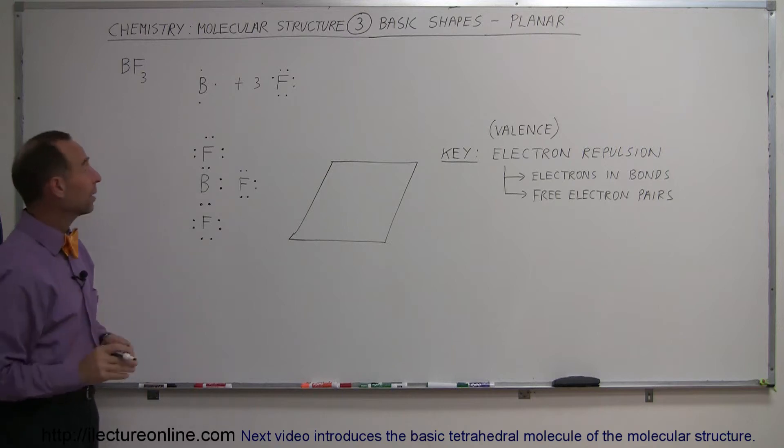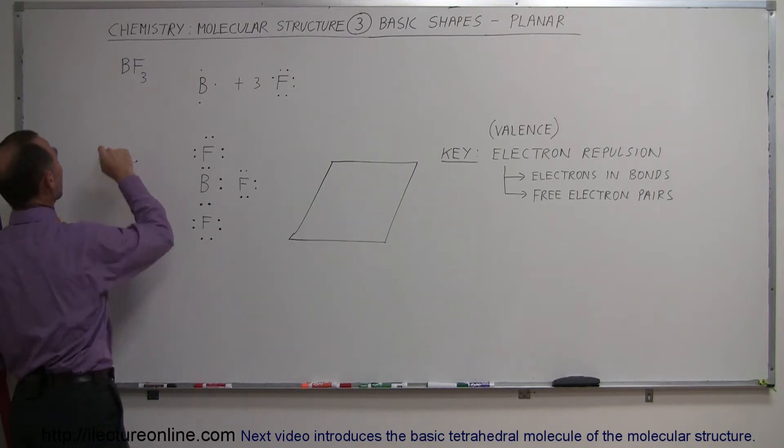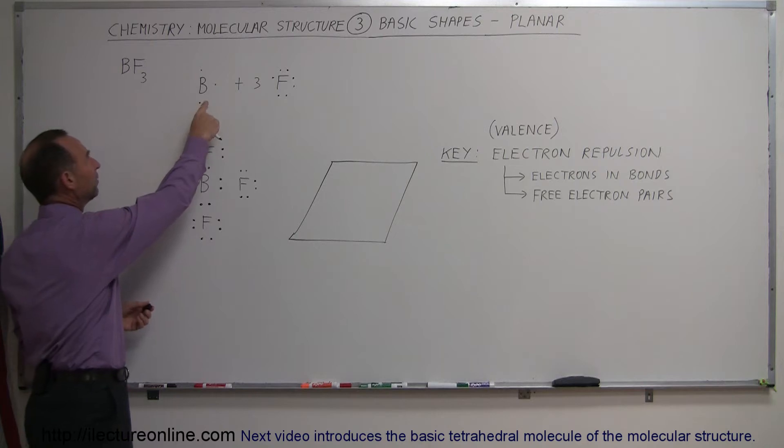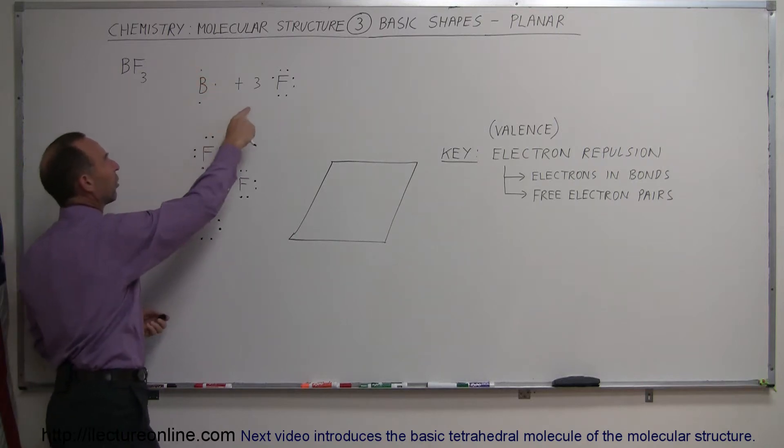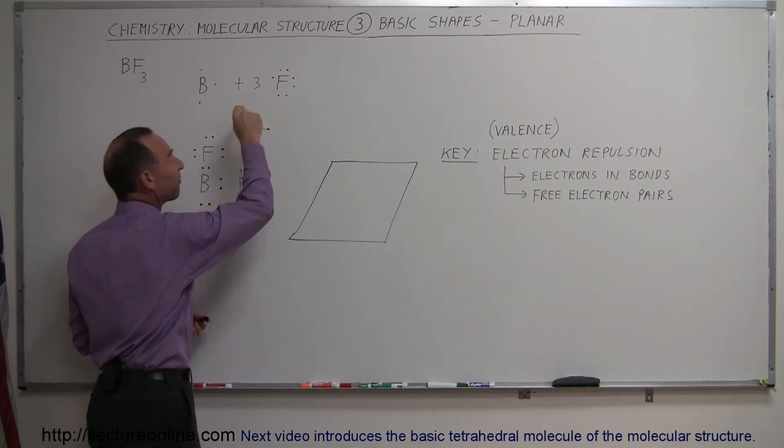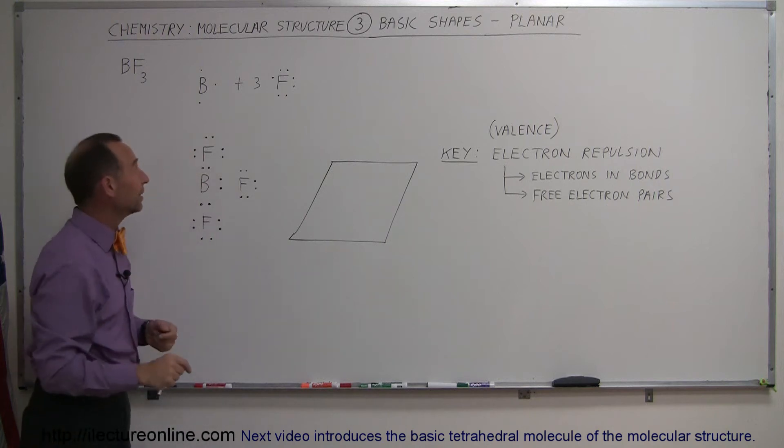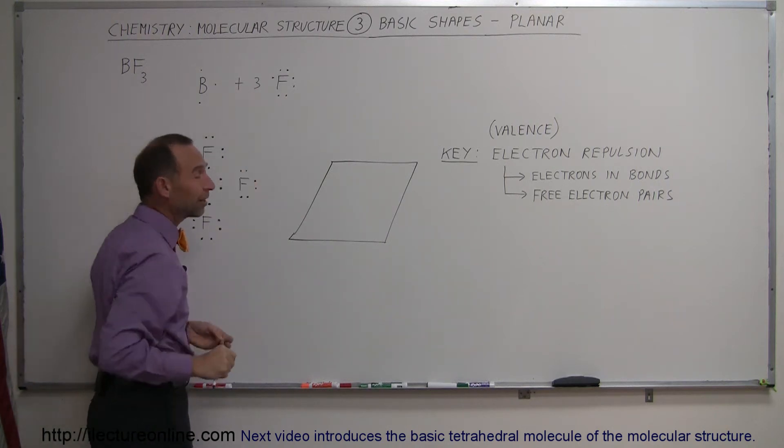So what kind of molecule should we consider? Well let's try boron trifluoride. One boron atom that has three valence electrons, three fluorine atoms that have seven valence electrons and in desperate need of an eighth electron to fill that valence shell.